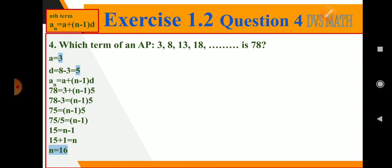So let me take the given. According to this, the first term is 3, difference is 8 minus 3, we got 5. Or 13 minus 8, you can do. So let us write the formula: an equals a plus n minus 1 into d.